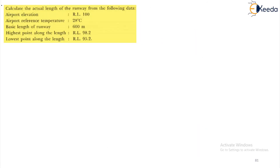The first question says: calculate the actual length of the runway from the following data. The airport elevation is given as RL 100. Airport reference temperature is 28 degrees centigrade. Basic runway length is 600 meters. The highest point along the length is RL 98.2 and the lowest point along the length is RL 95.2.